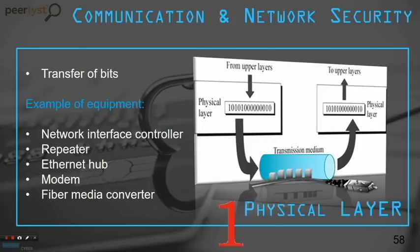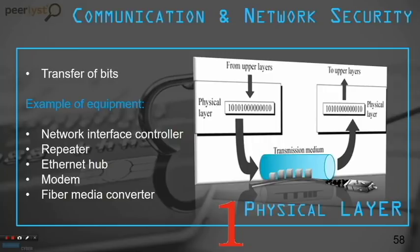The physical layer is in charge of the transfer of bits from one party to another through the transmission medium, such as an Ethernet cable. Examples of equipment at the physical layer include repeaters, modems, and fiber media converters. Remember the equipment examples for your exam.